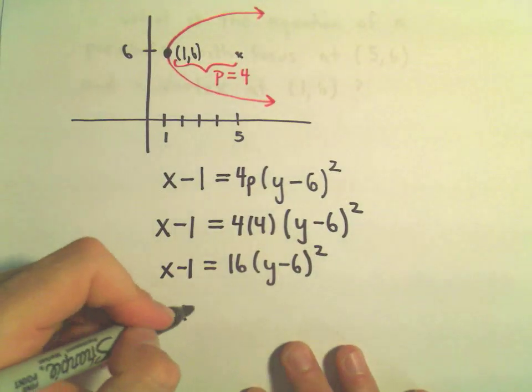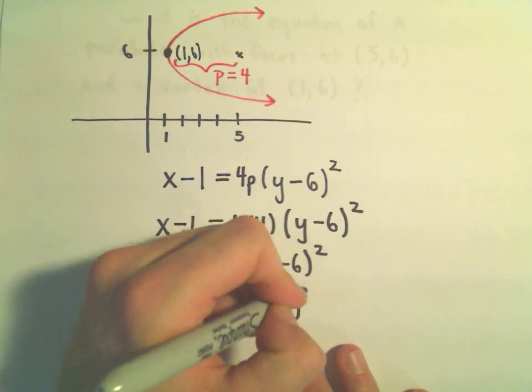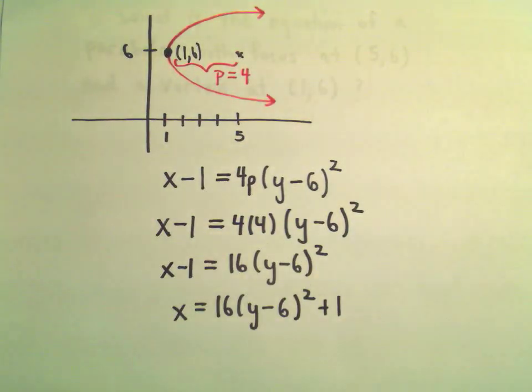Or we could write this as x equals 16 times y minus 6 squared plus 1. And now we've got the equation of our parabola.